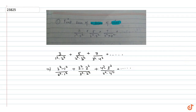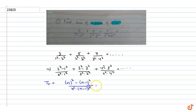So if we write the r-th term of the series, we can express it as n square minus (n minus 1) whole square upon n square into (n minus 1) square. This simplifies to 1 upon (n minus 1) square minus 1 upon n square.